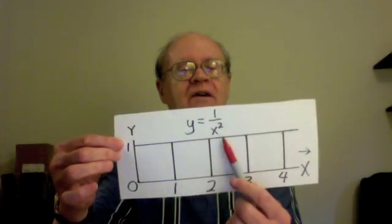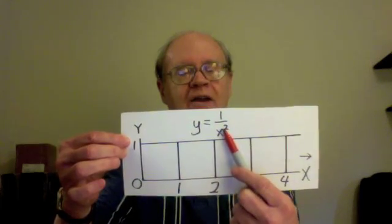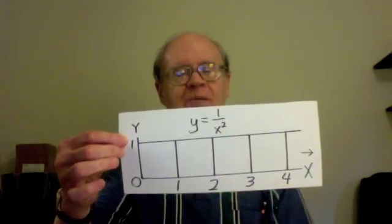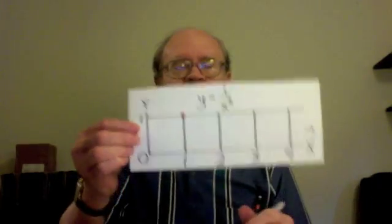When x is 1, y is 1 over 1 times 1, which is still 1. That gives us the x-y pair 1, 1, which was the same as in the other graph. I mark that with a point. That was the same, but from here on it's different.